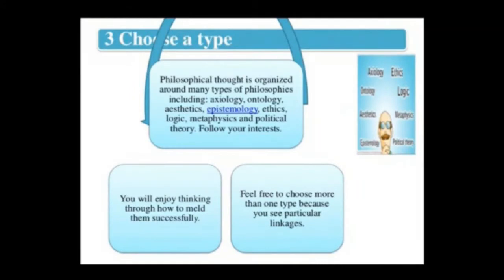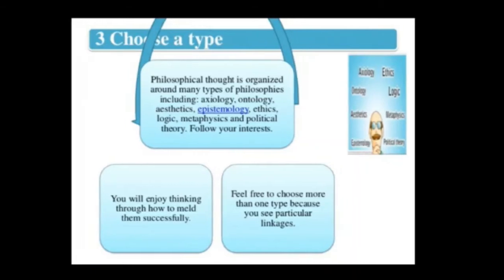Two: set types. Philosophical thought is organized around many types of philosophies including Axiology, Ontology, Aesthetics, Epistemology, Ethics, Logic, Metaphysics, and Political Theory. You will enjoy thinking through how to help them successfully. Feel free to choose more than one type because you see particular indicators.